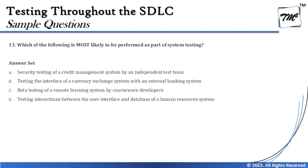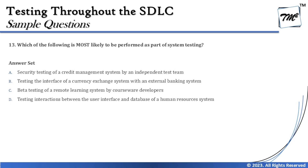Option C mentions beta testing of a remote learning system by courseware developers. Beta testing is part of acceptance testing, not system testing, so Option C is eliminated. Option D says testing interactions between the user interface and database of a human resource system — this is component integration or integration testing within the system, not system testing.